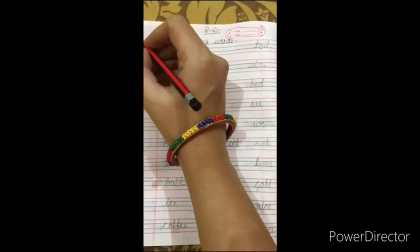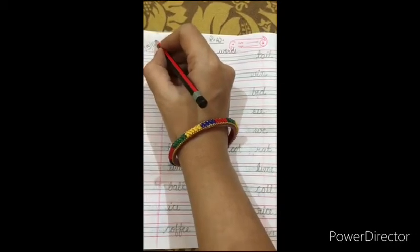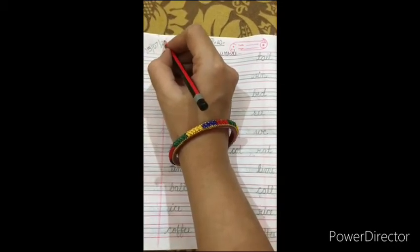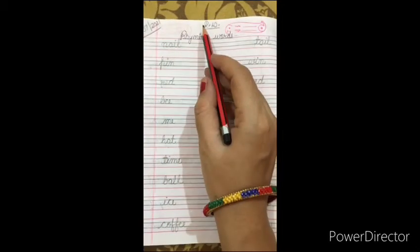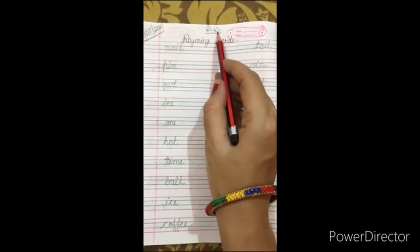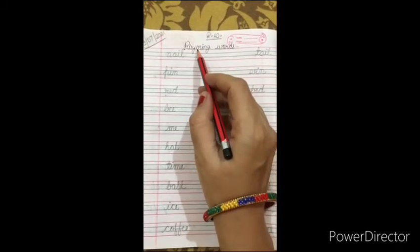First of all, write today's date: 15 July 2021. Then write RW on the top, means revision work. Write rhyming words. Clear? Rhyming words.